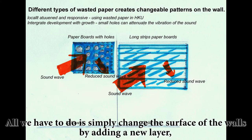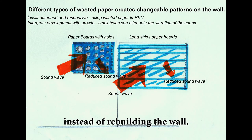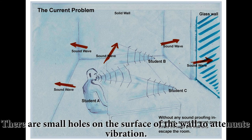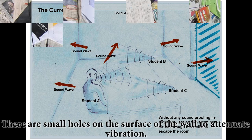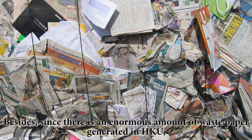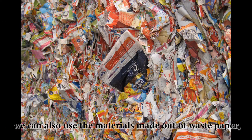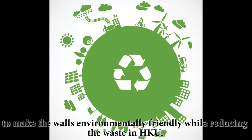All we have to do is simply change the surface of the walls by adding a new layer, instead of rebuilding the wall. There are small holes on the surface of the wall to attenuate vibration. Since there is an enormous amount of wasted paper generated in HKU, we can also use materials made out of wasted paper to make the walls environmentally friendly while reducing waste in HKU.